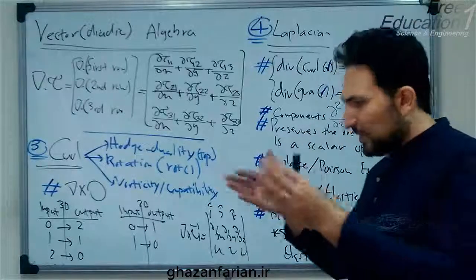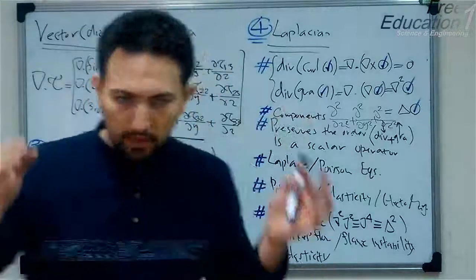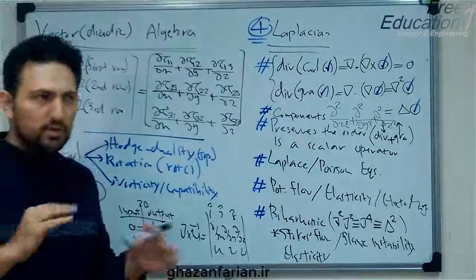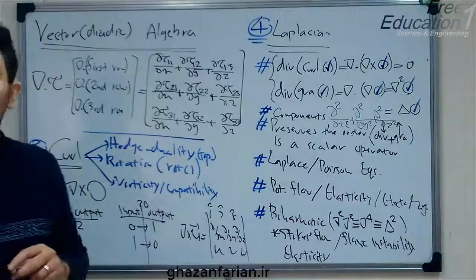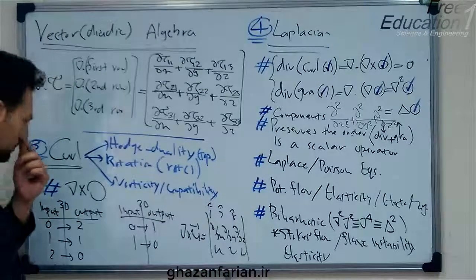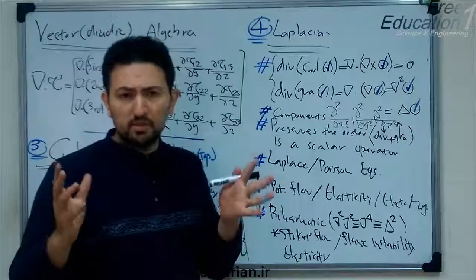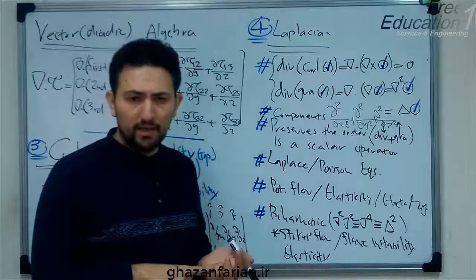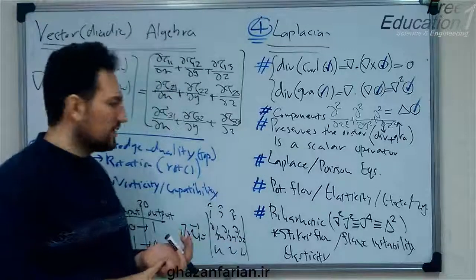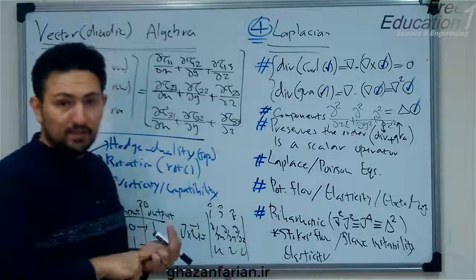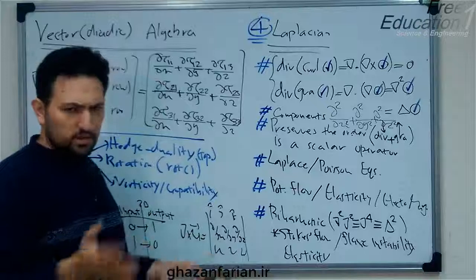When the Laplacian of something is not zero — for example, when it equals a constant — this equation, which is the non-homogeneous version of the Laplace equation, is called the Poisson equation. The Laplacian operator is frequently used in many different sciences, such as fluid mechanics in potential flow, in the definition of the stream function, in elasticity, in electromagnetics, and many other fields.